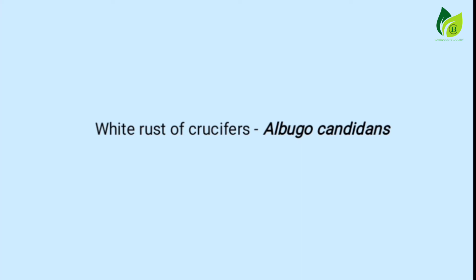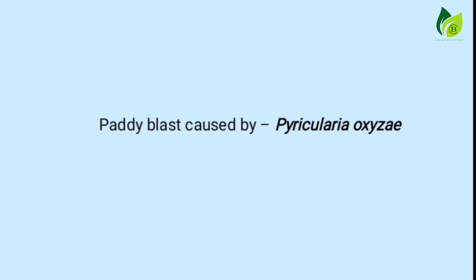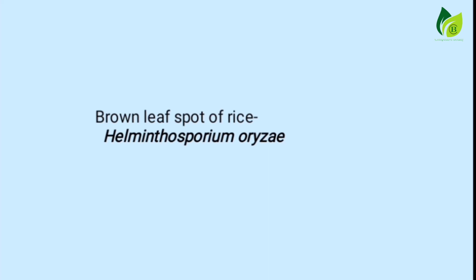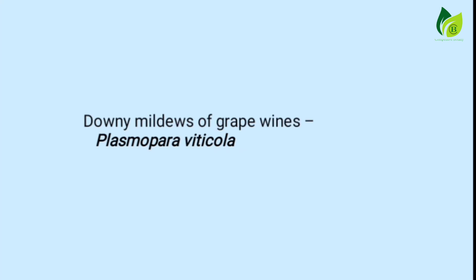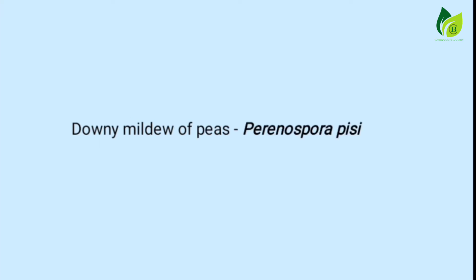White rust of crucifers caused by Albugo candida. Paddy blast caused by Pyricularia oryzae. Brown leaf spot of rice caused by Helminthosporium oryzae. Downy mildew of grapevines caused by Plasmopara viticola. Downy mildew of peas caused by